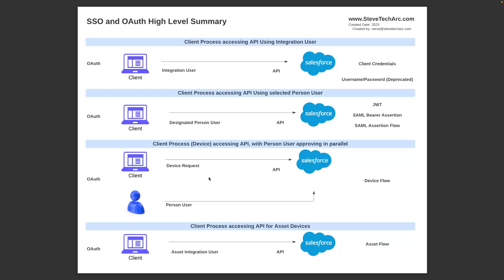In Device Flow, we're going to have a separate device that is going to attempt to make access to Salesforce data, but it needs to act on behalf of a separate user. That user will have to independently approve that request. So in this case, we have Salesforce, we have the client, and we have the human being who's going to be involved. We're going to walk through the details and do a demo.